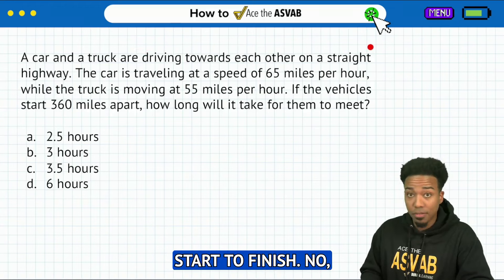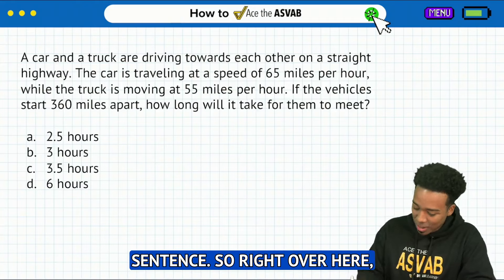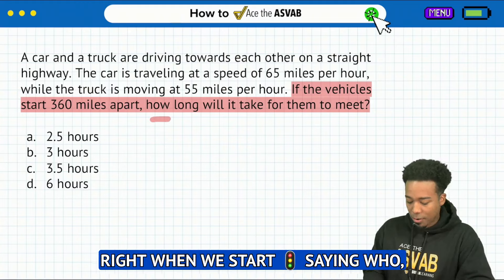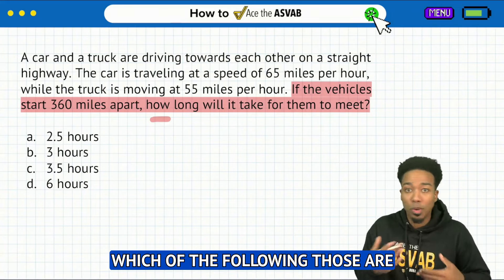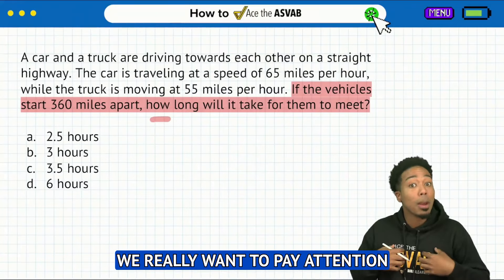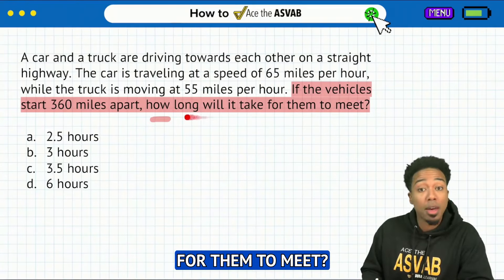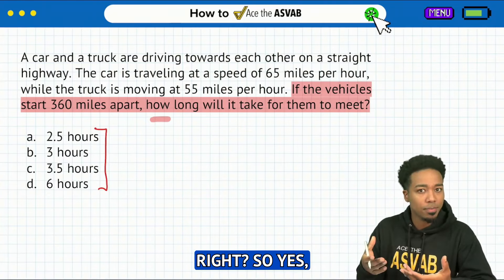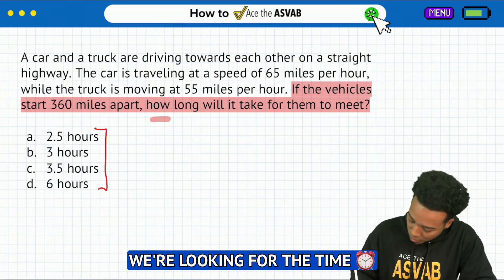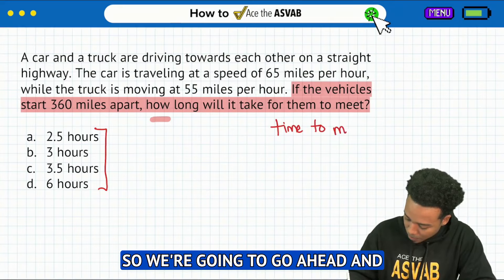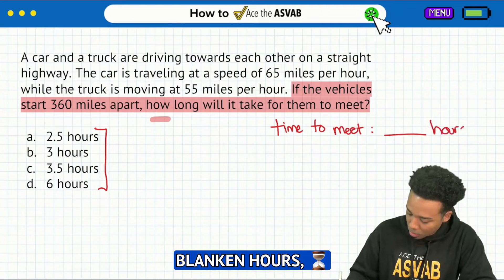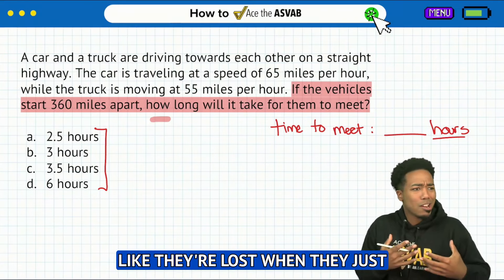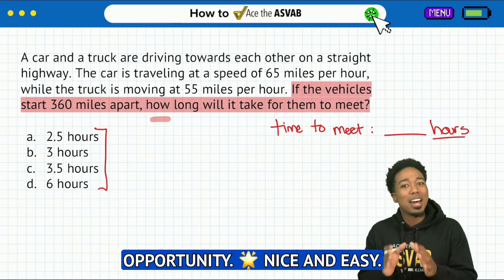Not the entire problem start to finish. We're going to start by going to the question sentence. So right over here, if the vehicles start 360 miles apart — right when we start saying who, what, when, where, how many, which of the following — those are those question action words that we really want to pay attention to. So right there, how long will it take for them to meet? So what does that tell us? Well, if you look at the answer choices, all of those are time values. So yes, we are looking for a time value — we're looking for the time to meet. So we're going to start by writing down blank hours, reminding ourselves that we want the answer in hours. Read the question first so you don't feel lost when you just started the problem.